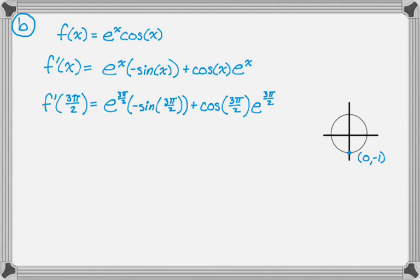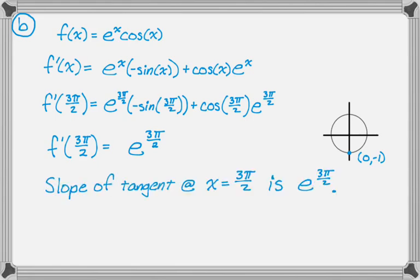So we said sine is negative 1. Cosine is 0, so the second half just drops out. So we end up with f prime of 3 pi over 2 is equal to just e to the 3 pi over 2. And then it's times negative negative 1, which is positive 1. So the question was to find the slope, so I'm just going to summarize. Slope of the tangent at x equals 3 pi over 2 is e to the 3 pi over 2. Moving on to the next question.